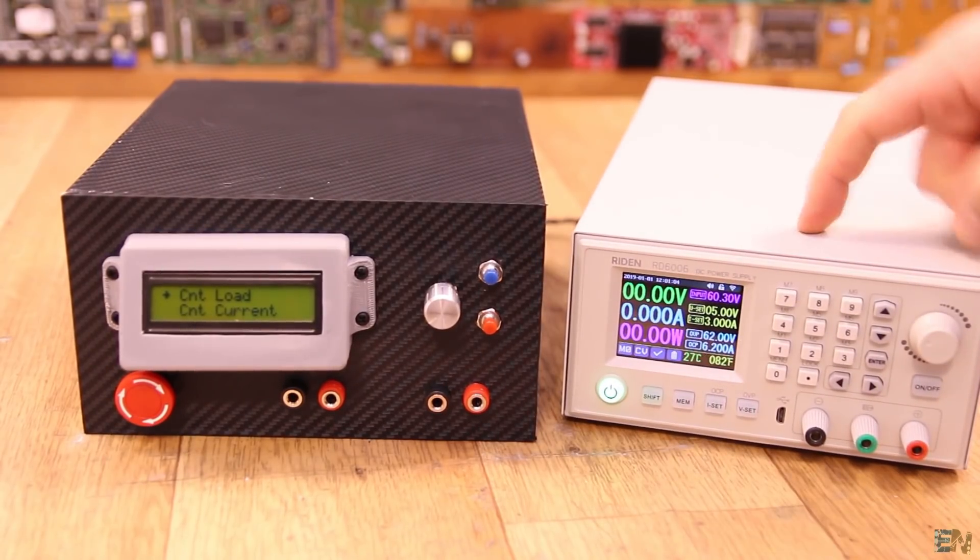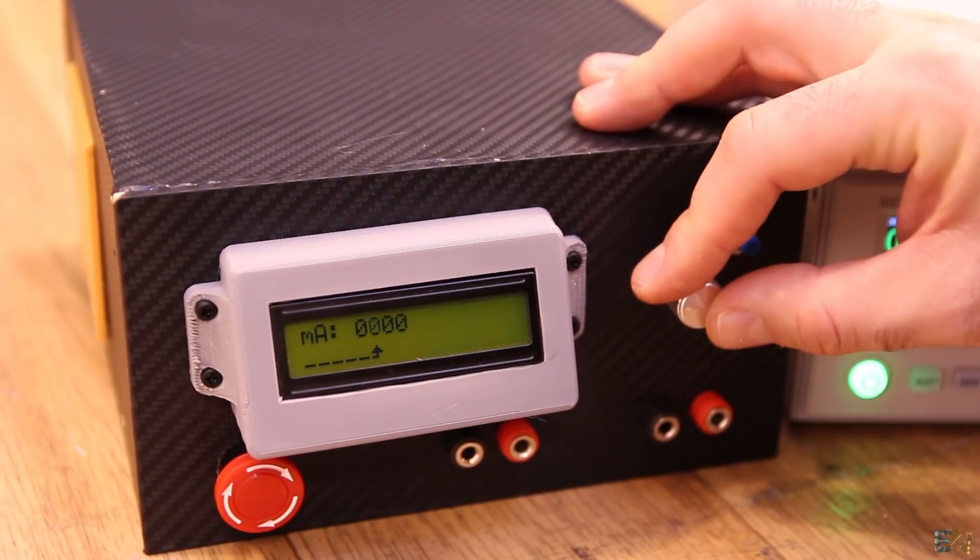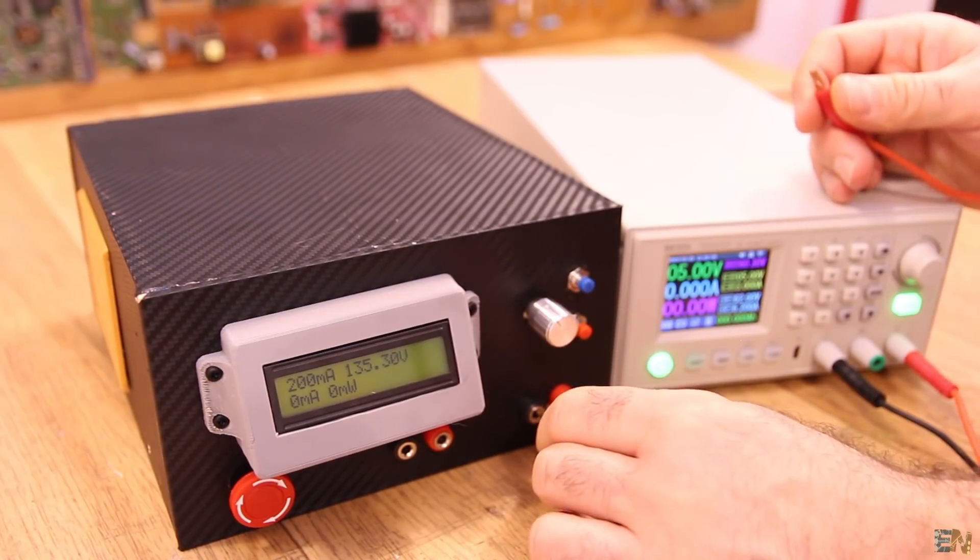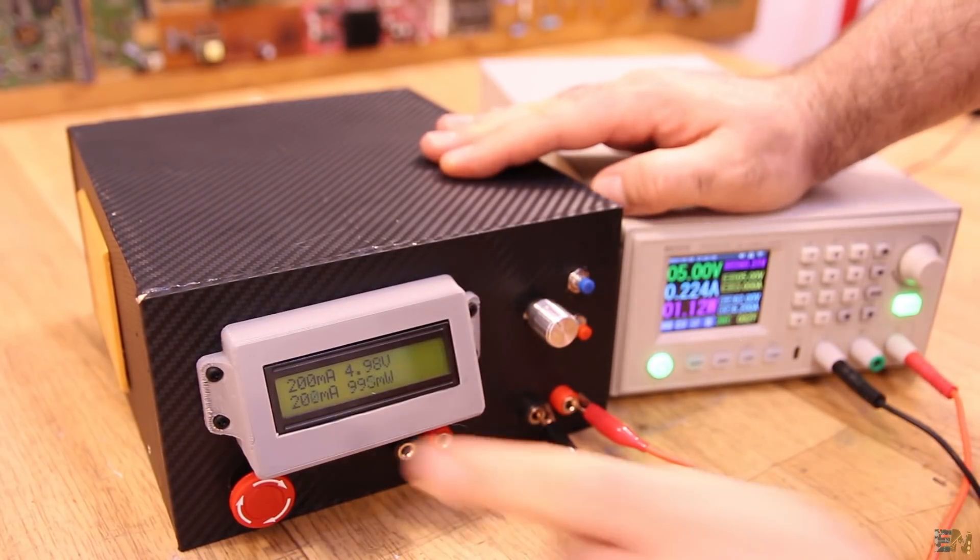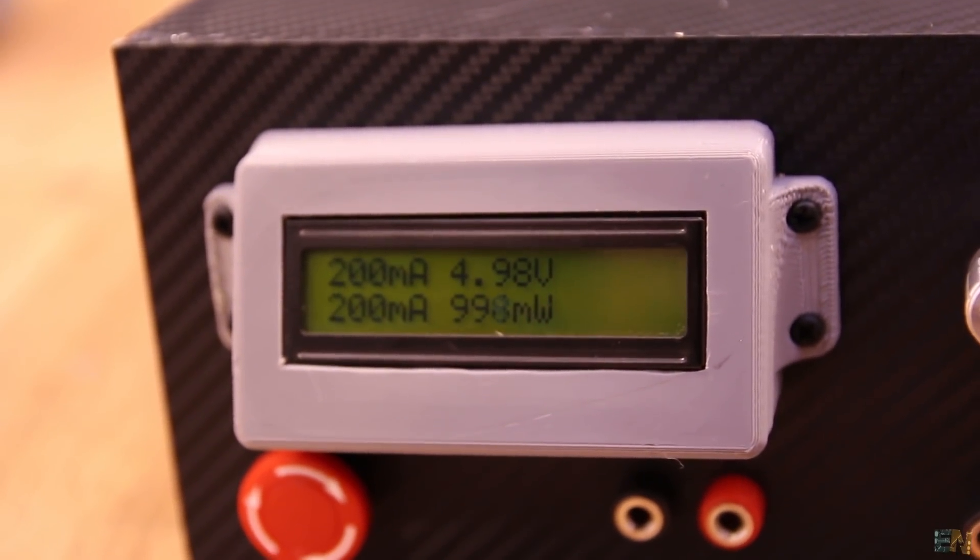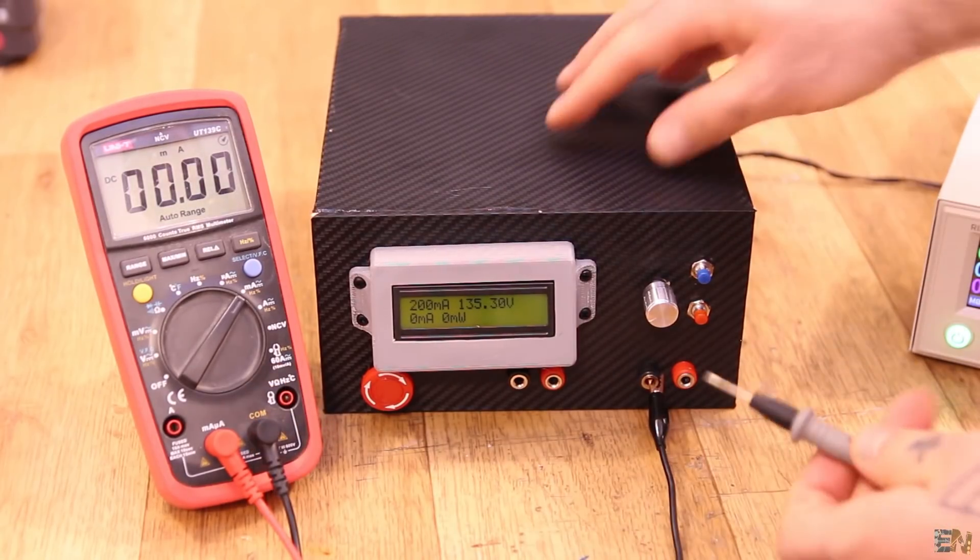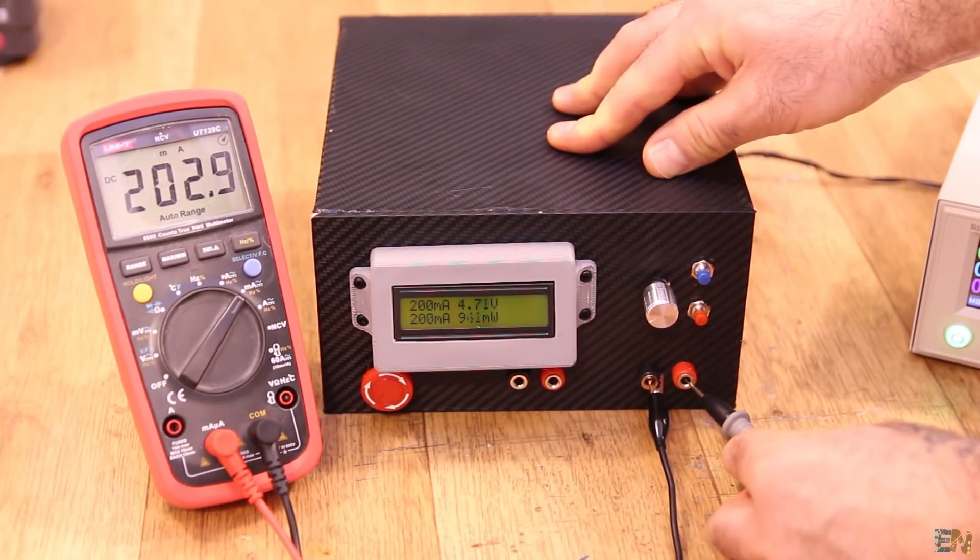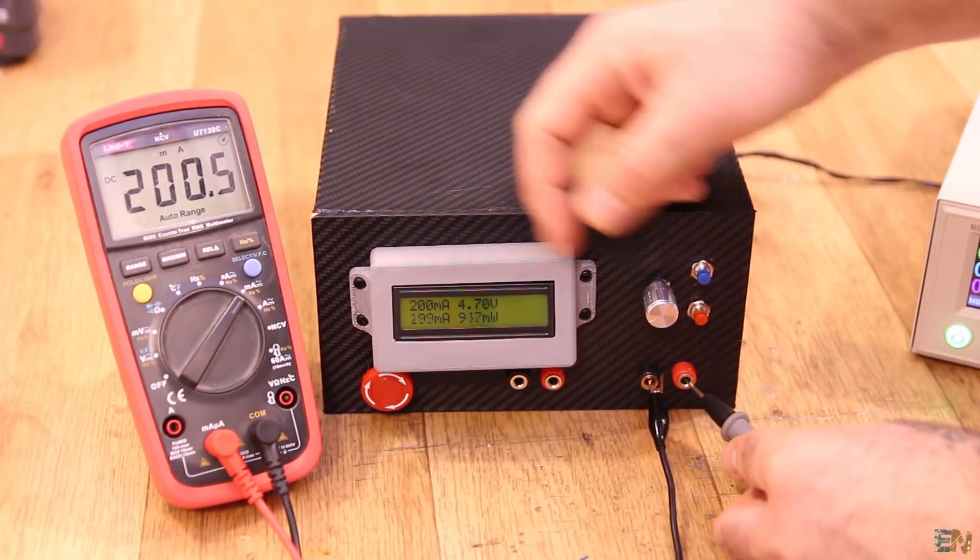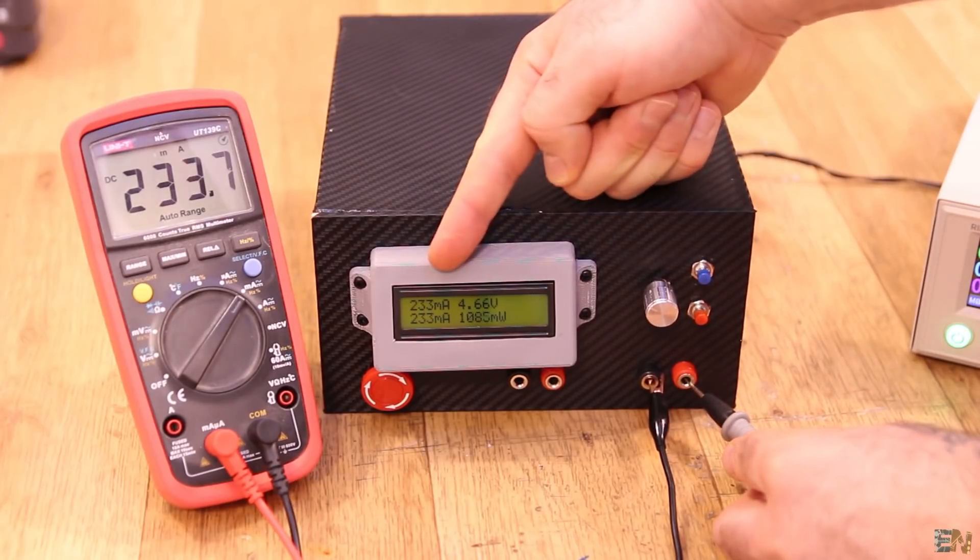Let's make another test. First I enter the current mode and I set it to let's say 200mA. I connect my power supply with a voltage of 5V. As you can see, 200mA are now flowing to the electronic load and we can see the voltage, the current and the power on the display. I've also connected a multimeter in series so we could see good values. While running I can increase the set point with the encoder and as you can see we have good values.